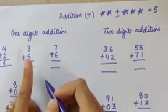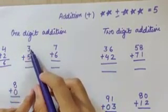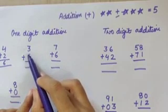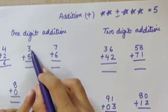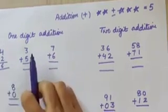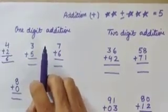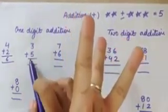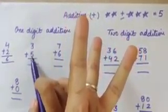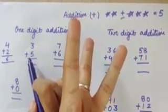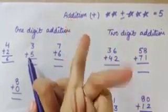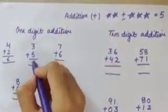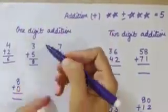Now let's do another one. We have to do 3 plus 5. The first number is 3, so we will open 3 fingers: 1, 2 and 3. Now the second number is 5, so we will count on after 5. After 5 comes 6, 7 and 8. So the answer will be 8. Very good.